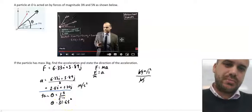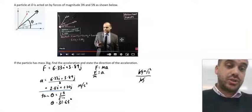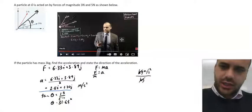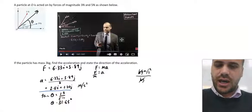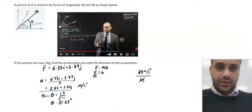So we have an acceleration of 2.11i plus 1.3j and a direction of 31.63. Now, maybe the question is ambiguous. Maybe you want to find the acceleration as a magnitude. If that's the case, just find the magnitude of this acceleration vector, and you'll have that as well.